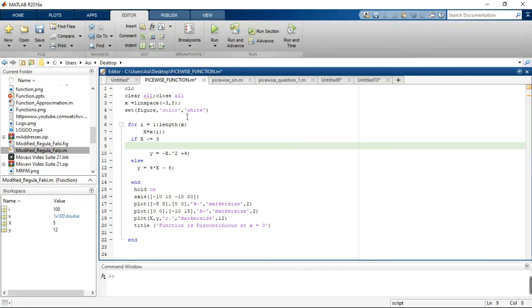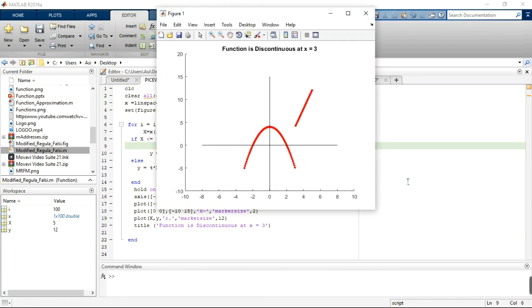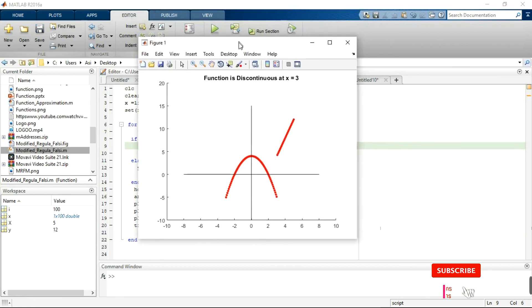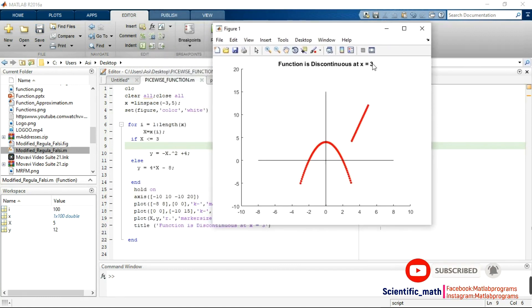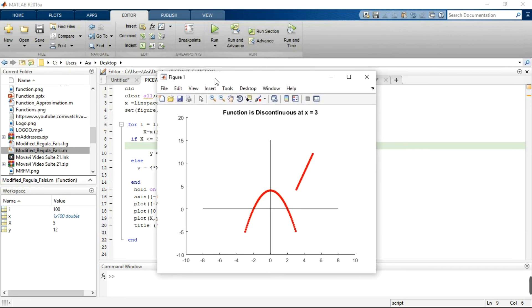This is the graph of our piecewise function. The function is discontinuous at x equals 3. Thank you so much for watching my video. Please subscribe to my channel Scientific_Math for more videos.